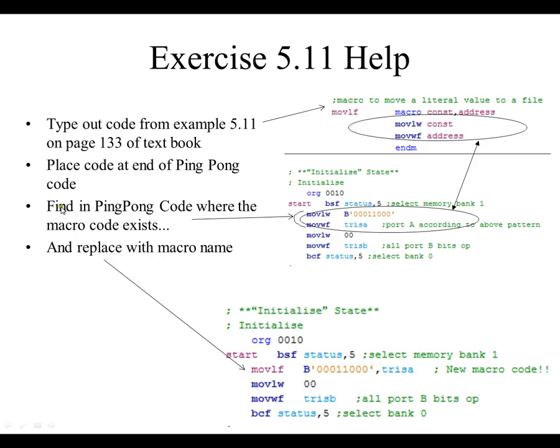Then what you do is you find the ping pong code where the macro code exists. So where's the macro code? The macro code is move literal to W and move W to F. So where do you find these commands inside the code? Well, at the very beginning, this is just an excerpt from the ping pong program. At the very beginning of the initialization, you see this command move WF and I'm sorry, move literal to W and move W to F. It's the same commands. So what you're going to do is you're going to replace this command, this section of the code with, which is the next line, replace with macro name.